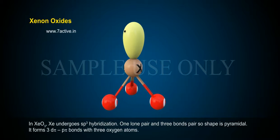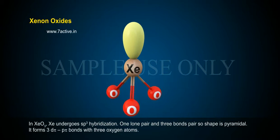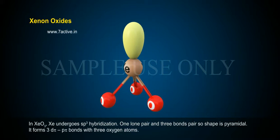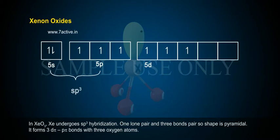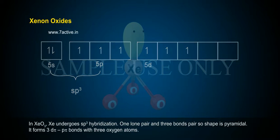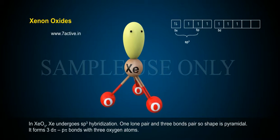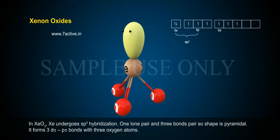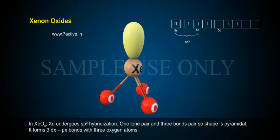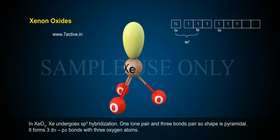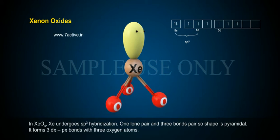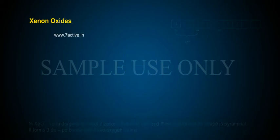In XeO3, Xe undergoes sp3 hybridization. It has one lone pair and three bond pairs, so the shape is pyramidal. It forms 3dπ–pπ bonds with three oxygen atoms.